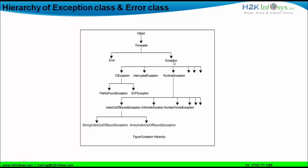Exception is further divided into two types: checked exception and unchecked exception. Runtime exception is part of your unchecked or uncaught exception. As part of runtime exceptions, we have index out of bound exception, arithmetic exception, number format exception, and null pointer exception. The index out of bound exception is of two types: string index out of bound and array index out of bound, and we have seen the example of array index out of bound exception.